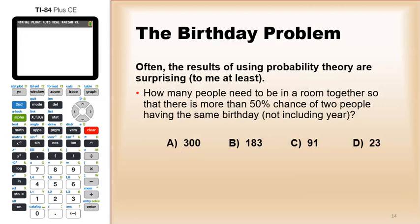Often, the results of using probability theory are surprising. So take a moment to think about this: how many people need to be in a room together so that there is more than a 50% chance of two people having the same birthday? And for this, I'm not including the year. So do you think it should be 300, 183, 91, or 23?